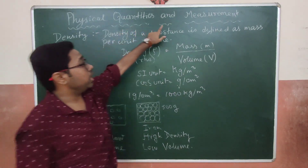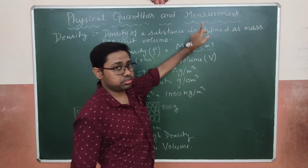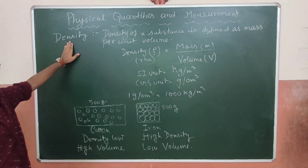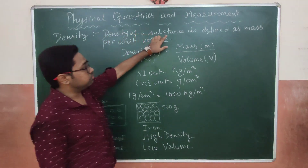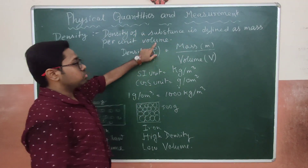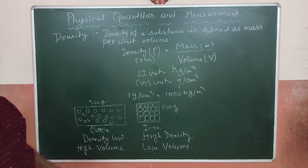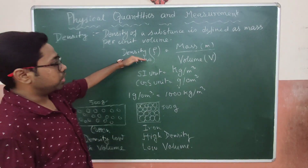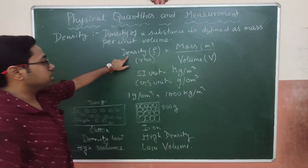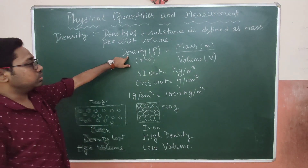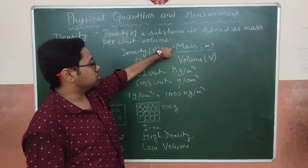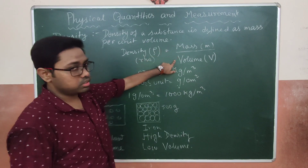In this chapter on physical quantities and measurement, we will first learn about density. The density of a substance is defined as mass per unit volume. So if we divide an object's mass by its volume, we get density. Density is written as rho (ρ), and the formula is: density equals mass divided by volume.